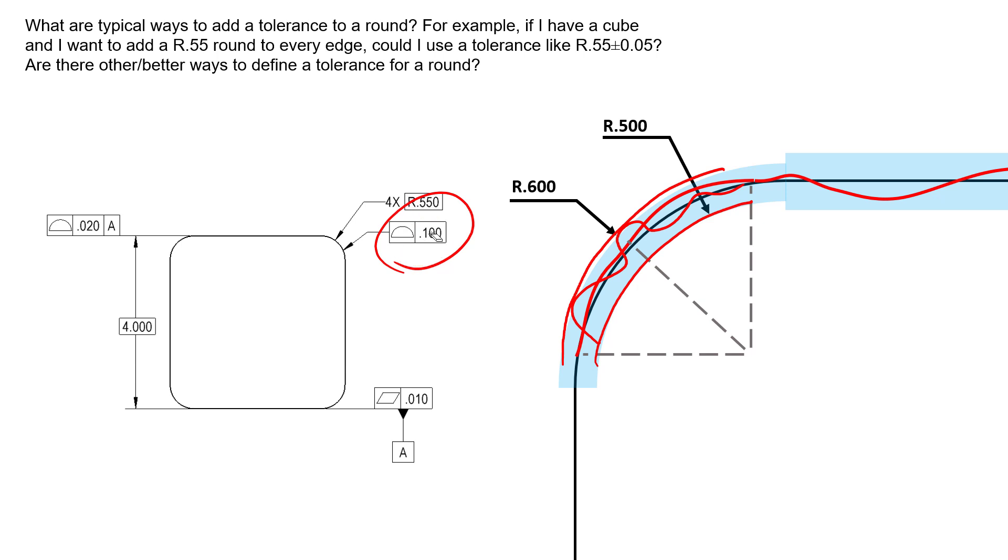And this profile of a surface callout right here will control the size and form of that feature by using this basic dimension to define the center of this tolerance zone. So we can control the size and form a little bit more directly and not have to worry so much about applying one value that represents this, you know, sort of irregular radius.